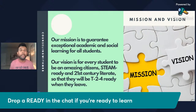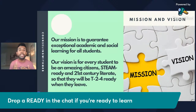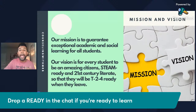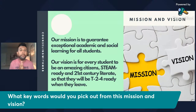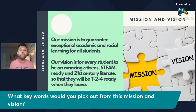Let's start with our mission and vision. This is my current school's mission and vision. Our mission is to guarantee exceptional academic and social learning for all students. Our vision is for every student to be an amazing citizen, STEAM ready, and 21st century literate so that they can be T24 ready — meaning technical school, two-year associate's degree, or four-year degree. They have to align with your counseling lessons.